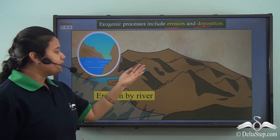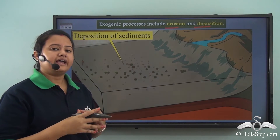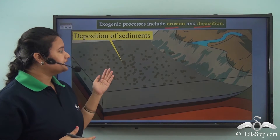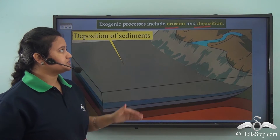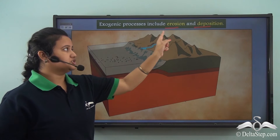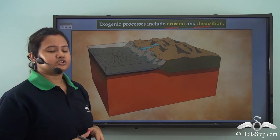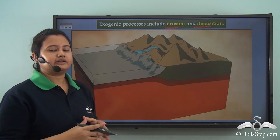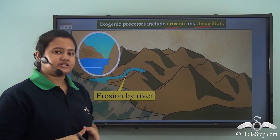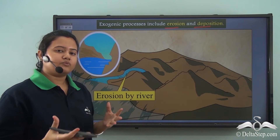Exogenic or external processes act on the earth's surface and include the processes of erosion and deposition. Erosion refers to the wearing down of the land surface by the action of wind, running water, etc. These eroded sediments are then deposited elsewhere. Erosion refers to the lowering of the land surface, whereas deposition causes upliftment of the land surface.